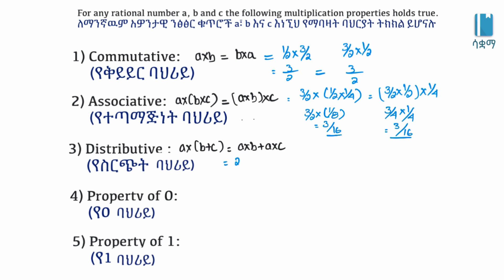For the distributive property: A times B plus C. Let's say 2 over 5 times 1 over 2 plus 3 over 2. This equals 2 over 5 times 1 over 2 plus 2 over 5 times 3 over 2. Calculating: 2 over 5, 1 over 2, 3 over 2.